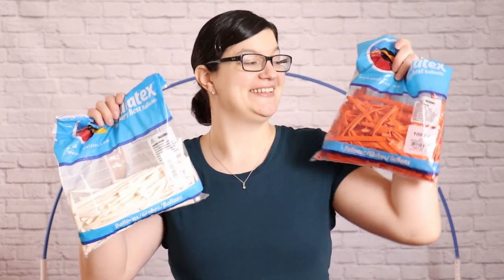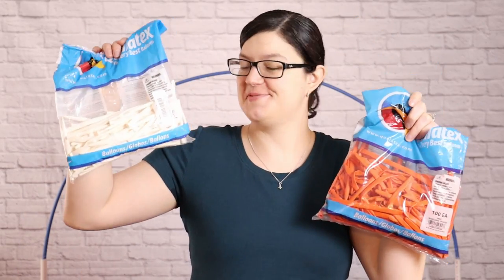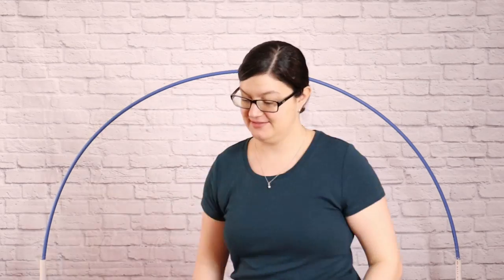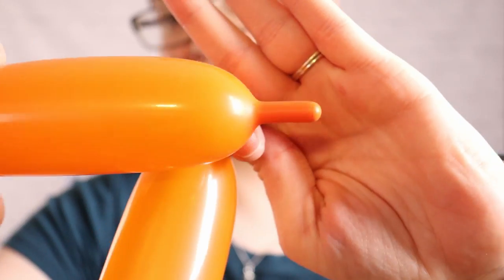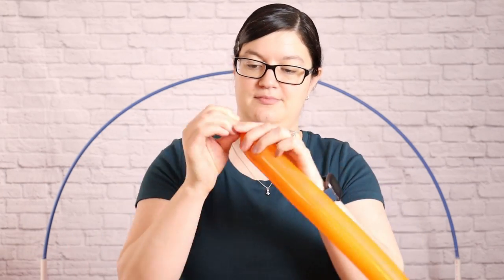This arch is made completely out of 260s and I'm using 20 in orange and 36 in white. Now I'm going to be inflating all of these balloons the exact same way. So let me grab my hand pump and show you how to do that. I'm putting eight pumps of air into each balloon or leaving one inch of uninflated tail on the end of every balloon. Once I've got that I'm just gonna let a little bit of the air out so it softens up the balloon and tie it off.